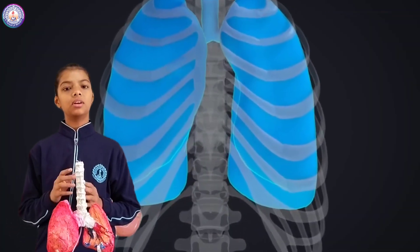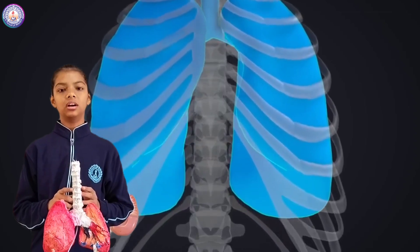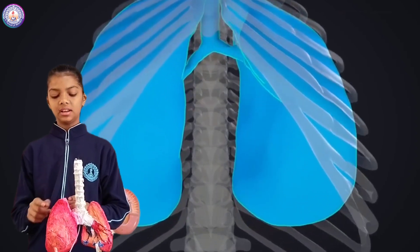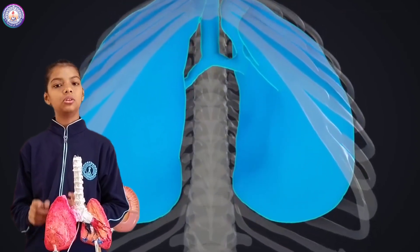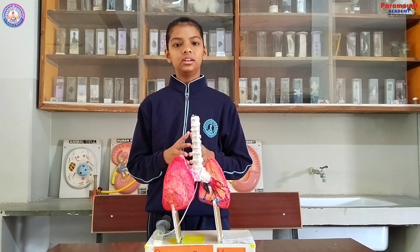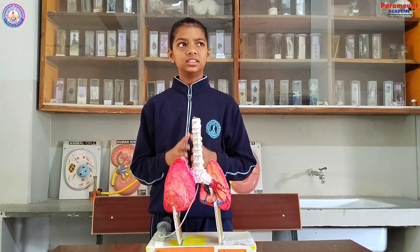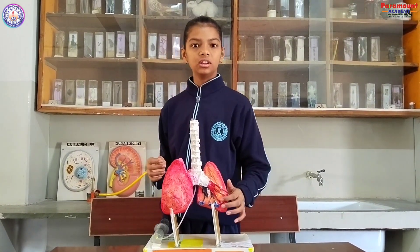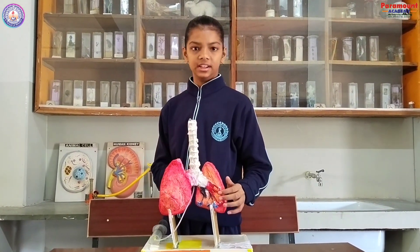The gas exchange occurs in the alveoli. Lungs — humans have one pair of lungs which are covered with a double layer membrane known as pleura. It consists of bronchioles and alveoli inside it.